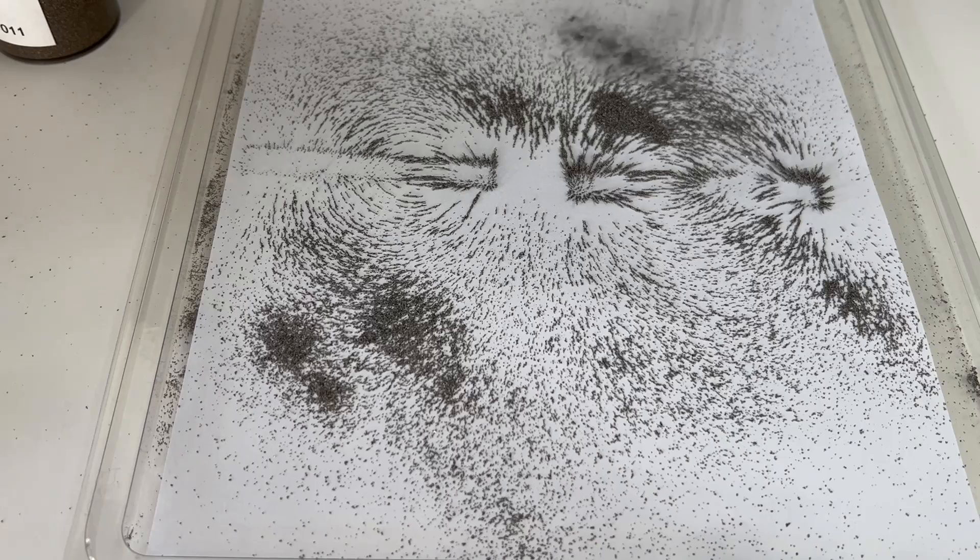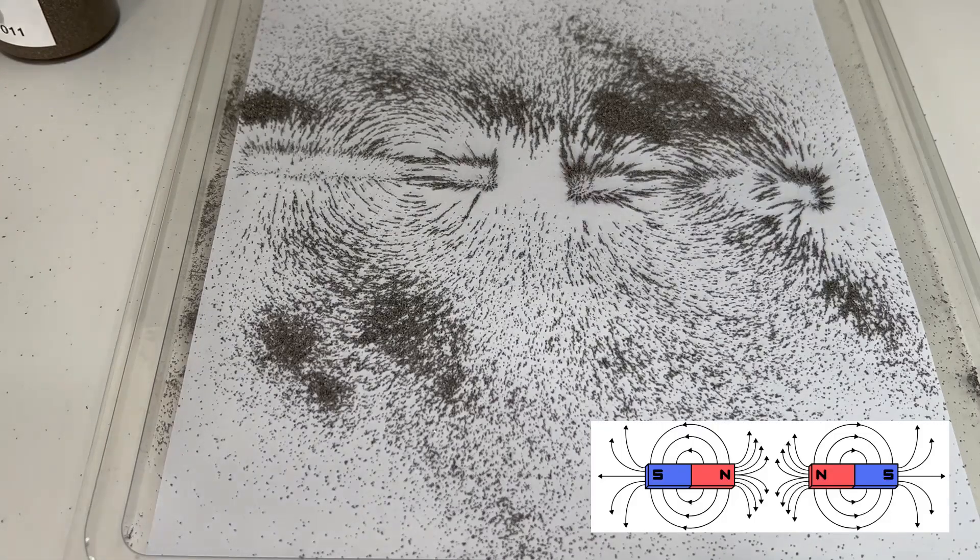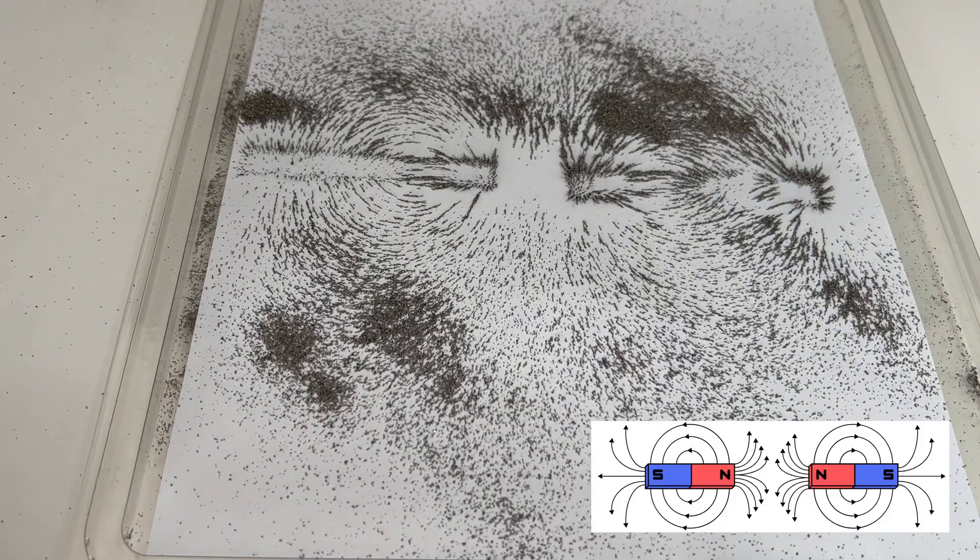the filings show us that the field lines repel each other. Like poles don't attract, they push away.